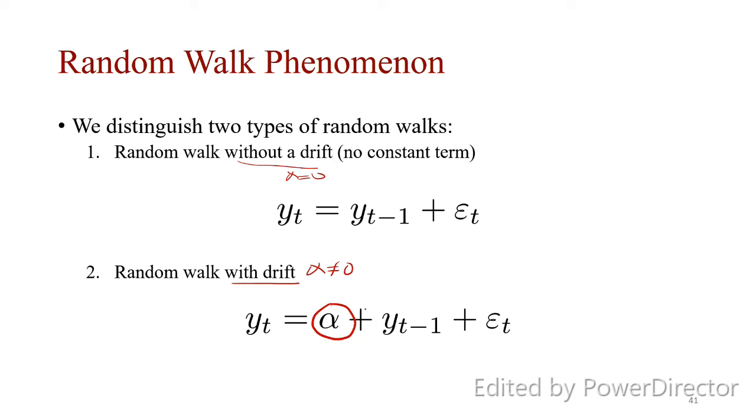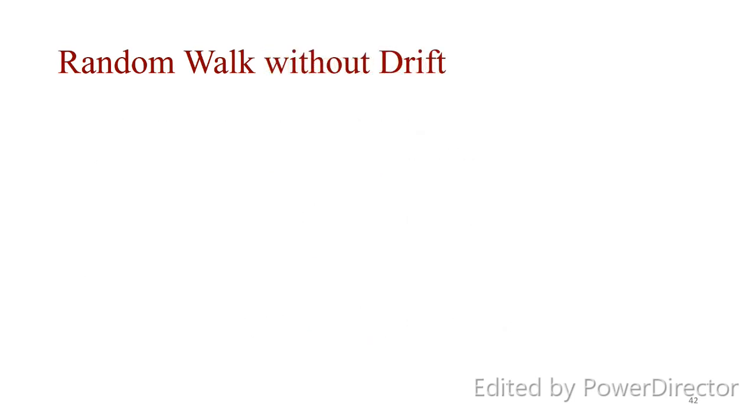Realize that in both things, λ in both cases is equal to 1. You see that 1 multiplied by yt-1, and here it's 1 multiplied by yt-1. I'm going to be applying random walk without drift, but you can generalize it to random walk with drift.